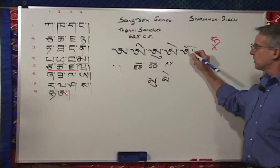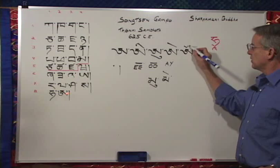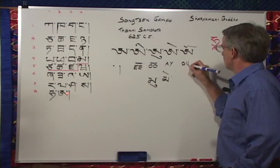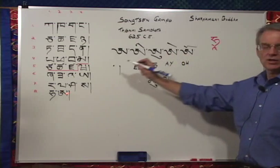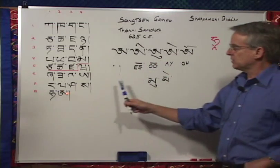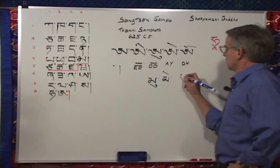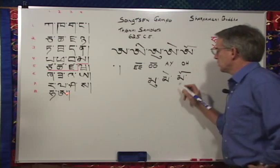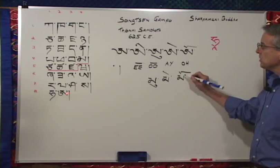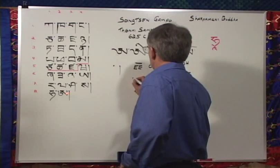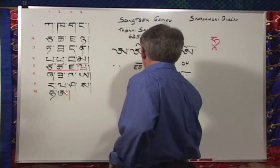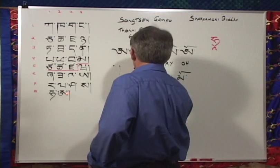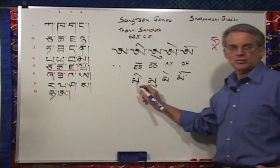The last of the vowels is the o sound. This vowel sign is called the naro. Putting a naro on any one of the thirty consonants will change its vowel sound from a to o. So this would be ma, naro, mo. To use the same example with the gi-gu, the first of the vowel signs, here we have the consonant ma again — we put a gi-gu on it, and then we have ma, gi-gu, mi.